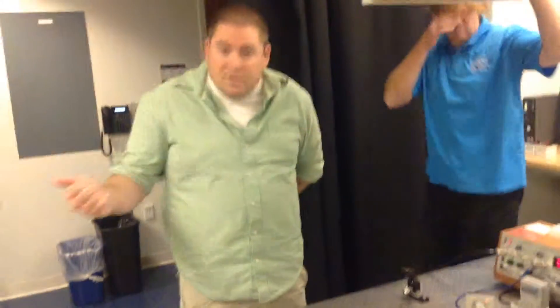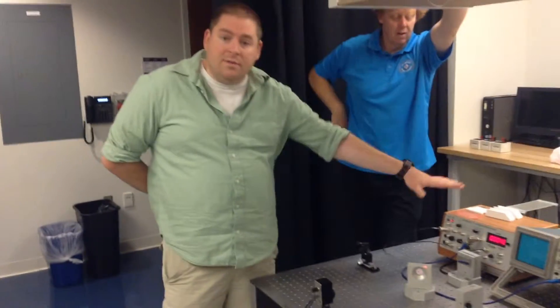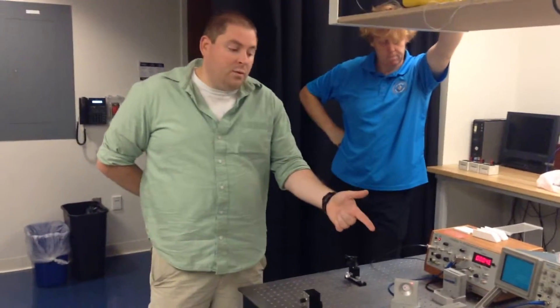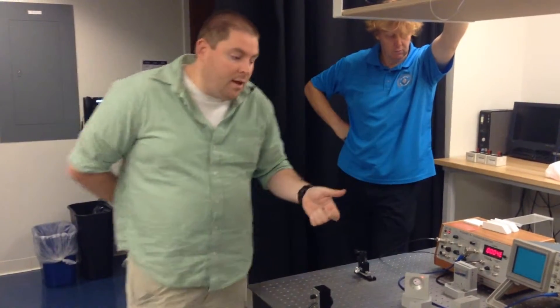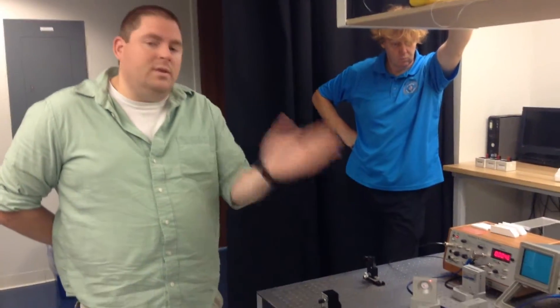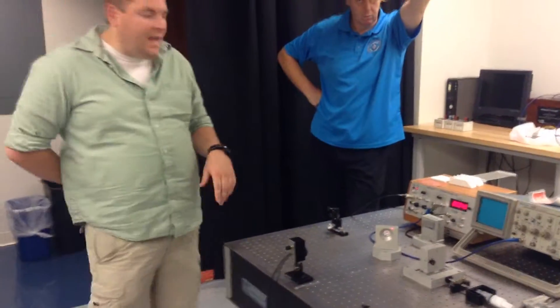All right, so just like we counted fringes before, this machine is going to count the number of fringes, and we're going to have an automatic way to actually turn this vernier caliper. Hold on, get rid of that. That was stupid. It's not a caliper.